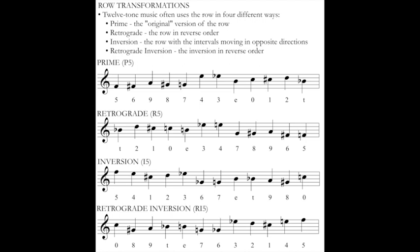So what can we do with these 12 notes in a piece of music once we have them? Or if we're analyzing a piece of 12-tone music, what should we be looking for? 12-tone music often uses the row in four different ways — four forms of the row. The prime form is the original version of the row. I've labeled it P5, because it starts on pitch class 5, F. I might find any number of transpositions of this prime form throughout a piece of music.